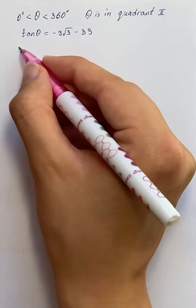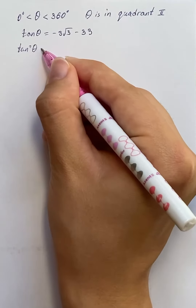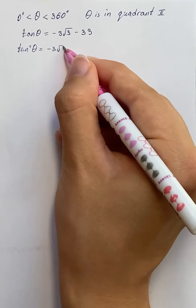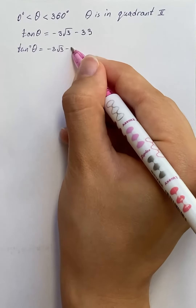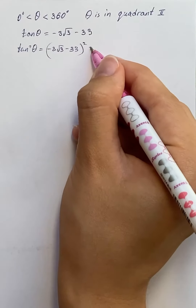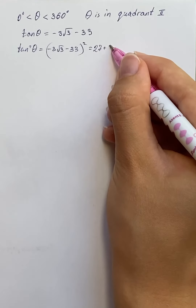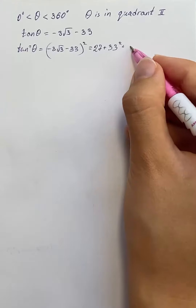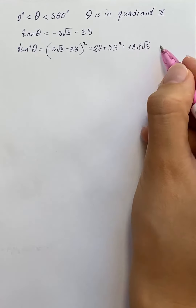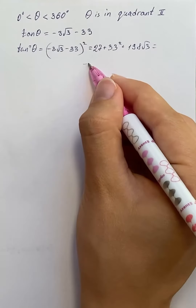First, we're going to find tan squared theta, which is equal to negative 3 square root of 3, minus 33, squared. We get 27 plus 33 squared plus 198 square root of 3.